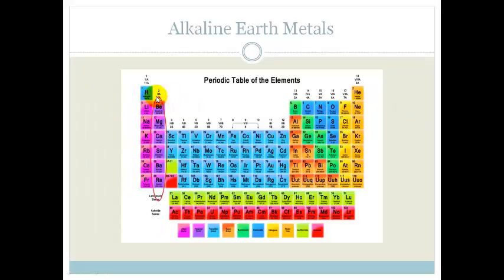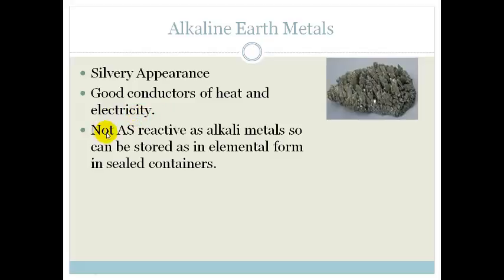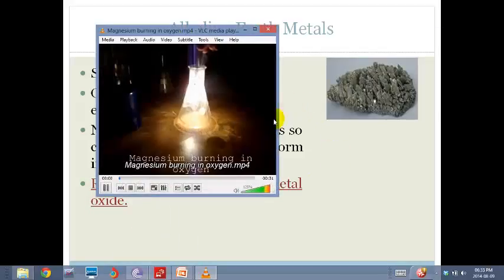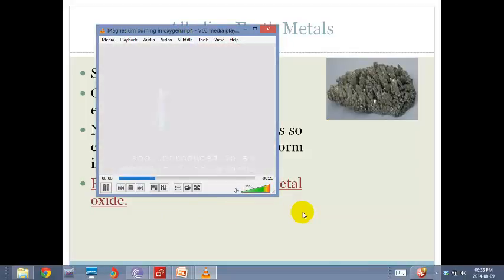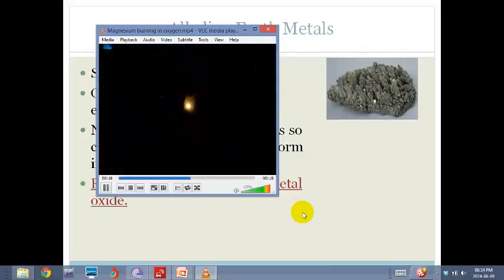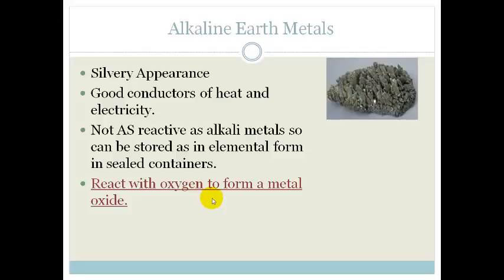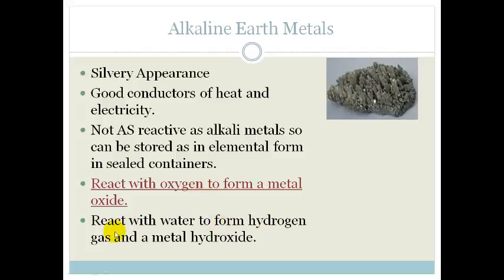Now, let's talk about the alkali earth metals or alkaline earth metals. So, we're looking at beryllium, magnesium, calcium, strontium, barium and radon. They are silvery in appearance but you'll notice they're a little bit more crystalline. They are also good conductors of heat and electricity again because they're metals. But they're not as reactive as alkaline metals. So, they can be stored in elemental form in sealed containers. And when they react with oxygen, they form a metal oxide. So, now let's look at magnesium burning in oxygen. So, we're going to take a bit of magnesium and burn it in some oxygen. And you can see that magnesium burns with a bright white light and it's very hot and very exothermic. They also react with water to form hydrogen gas and a metal hydroxide but not nearly as violent as your alkali metals.